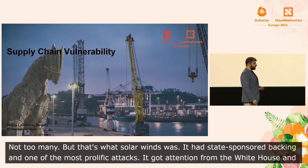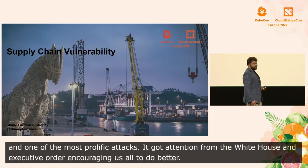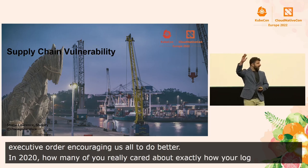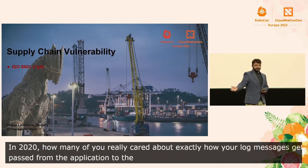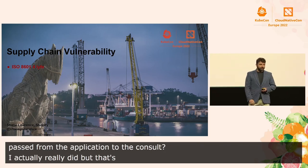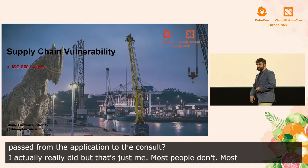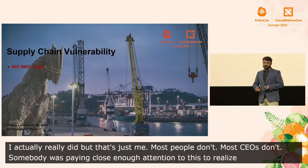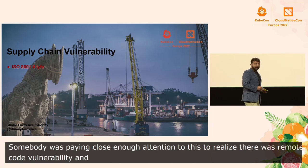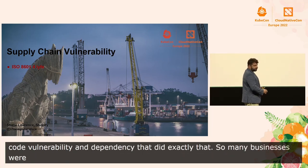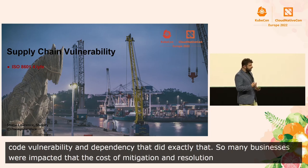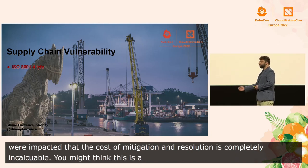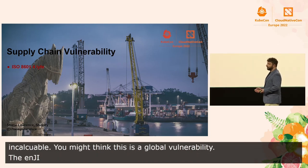And in 2020, how many of you really cared about the minutiae of exactly how your log messages get passed from your application to the console? Most people don't. Most CEOs and CISOs don't. But somebody was paying close enough attention to realize that there was a remote code execution vulnerability in a ubiquitous dependency that did exactly that. So many businesses were impacted that the cost of mitigation and resolution is completely incalculable. You might even think this is a global vulnerability, but the Ingenuity helicopter on Mars was also running Log4j, so this is actually now an interplanetary problem. Congratulations.